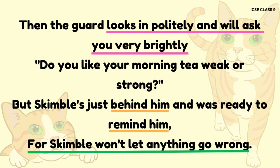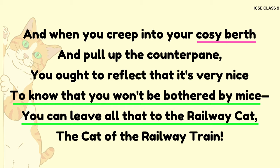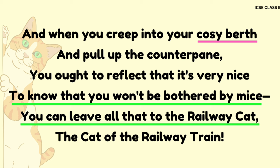Line 43: 'For Skimble won't let anything go wrong.' This is an example of irony. Since being a cat, Skimble Shanks actually doesn't have the power to stop anything from going wrong in the Nightmail train. But the irony in this line adds a humorous touch.